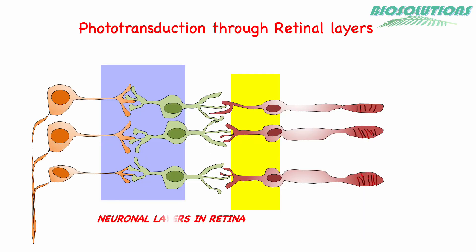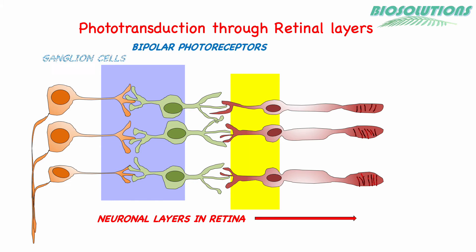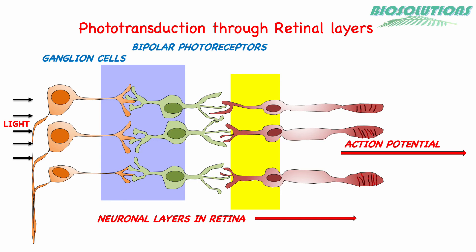How do we see an object? Light rays fall on the cornea and through the pupil and iris enter the lens. The lens focuses the light rays on the retina, where rod and cone cell photoreceptors convert light photons to electrical signals through generation of action potentials.